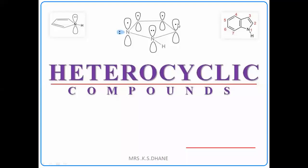Good morning, dear students. Up till now we have seen the discussion on heterocyclic compounds. We have covered heterocyclic compounds containing only one hetero atom. We have seen the synthesis, reactions and medicinal uses of compounds containing five-membered cyclic rings — in case of furan it is oxygen, in case of pyrrole it is nitrogen, and in case of thiophene it is sulfur.